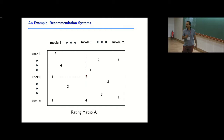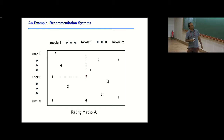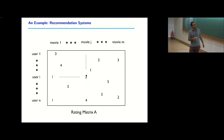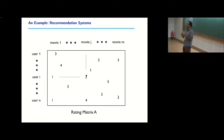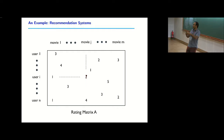Think of N users and N movies. For some user-movie pairs we know the rating — for example, user one has rated movie one as three. Lots of entries are not observed. What we want to do is figure out, given the partially observed matrix, what are the missing entries. If user 27 logs in on Netflix, I want to figure out what movie they'd like — look at movies they haven't seen, estimate their ratings, sort them, and show the top five.